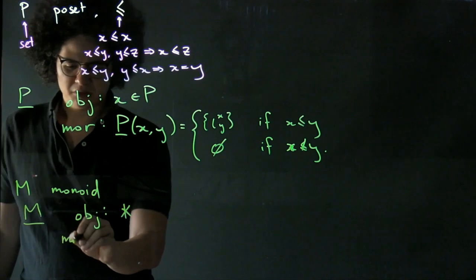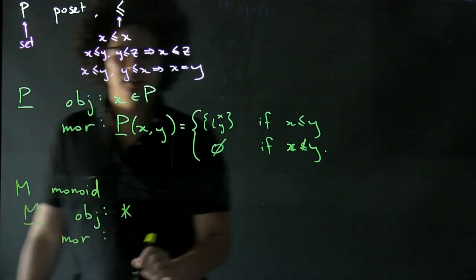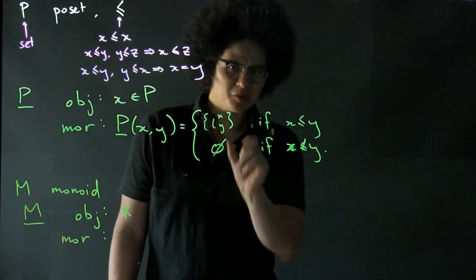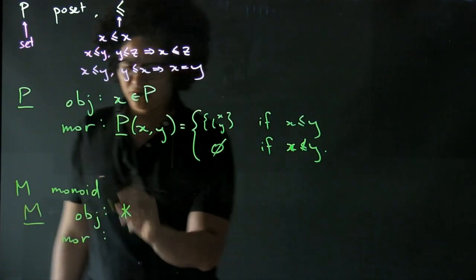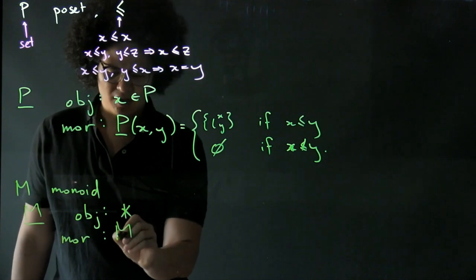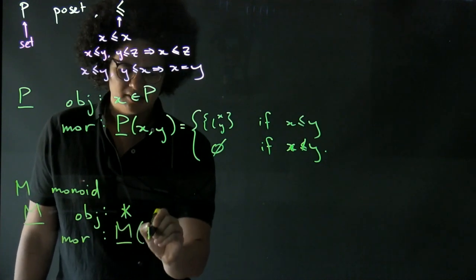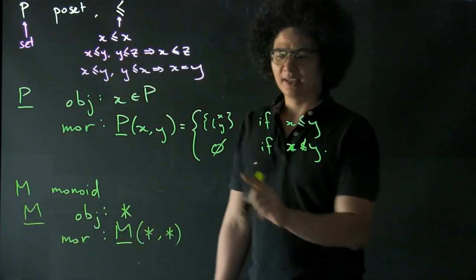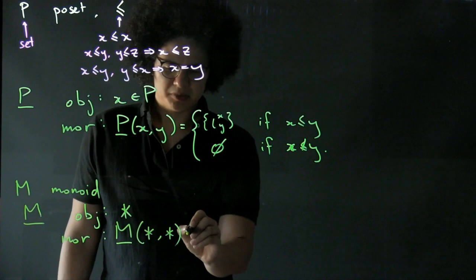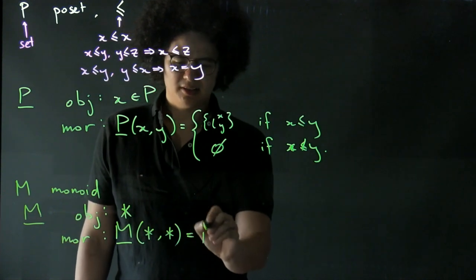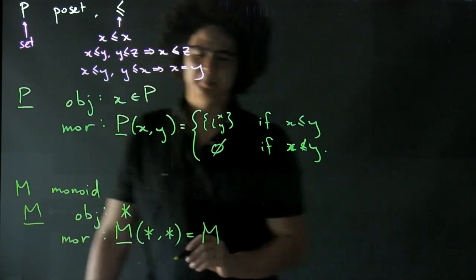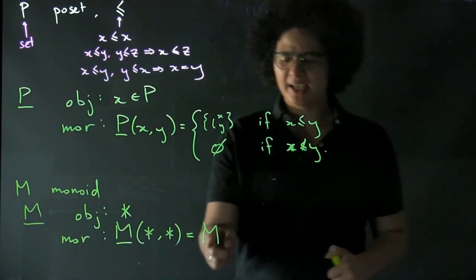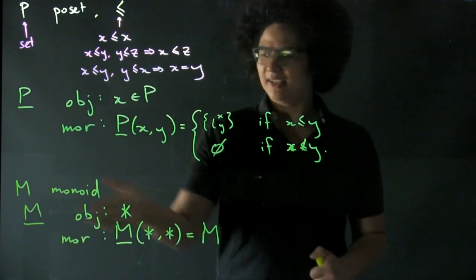So the morphisms. What are our morphisms? Well, I have a set of morphisms between each pair of objects in the category. But there's only one object in this category. So the only set of morphisms I need to describe to you are M underline between the single object and itself. And those morphisms are going to be the elements of M.